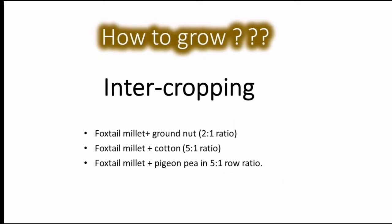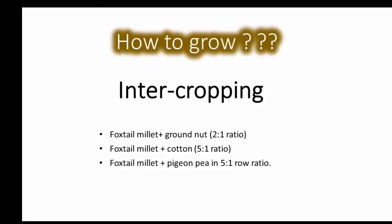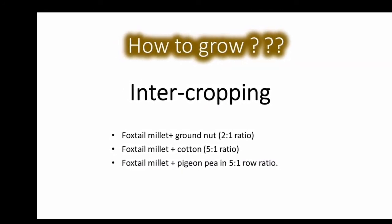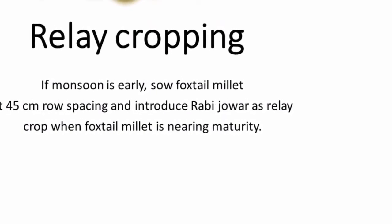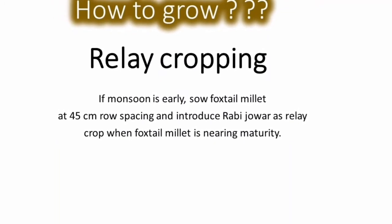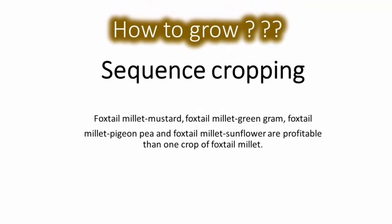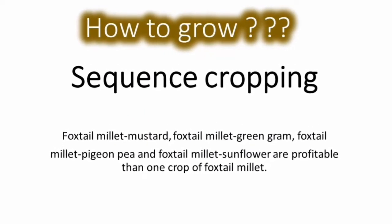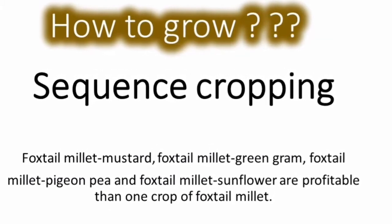You can also intercrop foxtail millet with groundnut. Foxtail millet may be intercropped with cotton in a 5:1 ratio, and with pigeonpea in a 5:1 ratio. If the monsoon is early, foxtail millet can be relay cropped at 45 cm row spacing, introducing rabi jawar as a relay crop when foxtail millet is nearing maturity. Foxtail millet can also be grown as sequence cropping — foxtail millet followed by mustard, green gram, pigeonpea, or sunflower — all more profitable options.